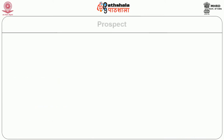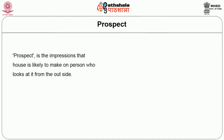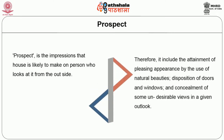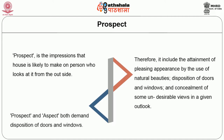The second most important principle of planning is prospect. Prospect is the impression that a house is likely to make on a person who looks at it from the outside. It includes the attainment of a pleasing appearance by the use of natural beauties, disposition of doors and windows, and concealment of undesirable views. Both prospect and aspect demand careful disposition of doors and windows.